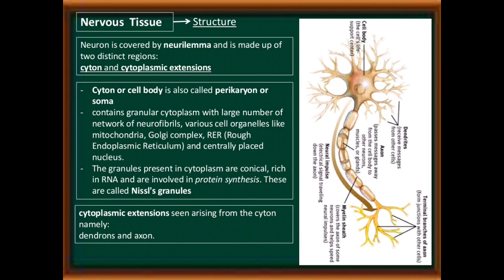The granules present in the cytoplasm are conical, rich in RNA, and are involved in protein synthesis. These are called Nissl granules. Cytoplasmic extensions arising from the cytone are namely dendron and axon. See the diagram of a neuron showing various parts: cell body, dendrites, axon, neural impulse, myelin sheath, and terminal branches of axon.